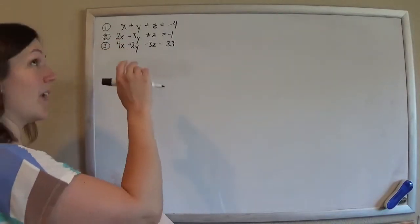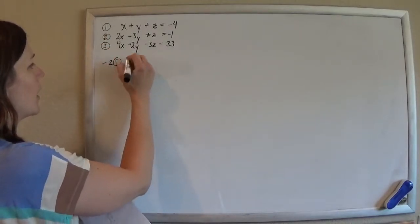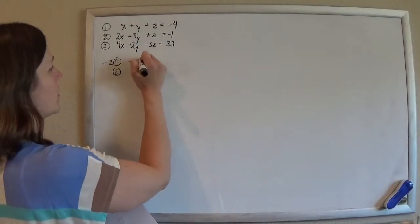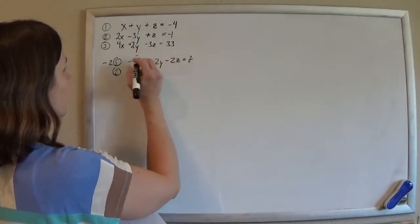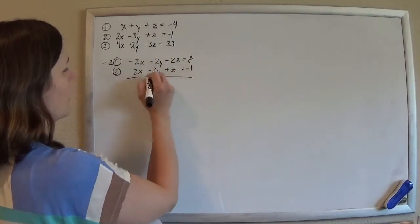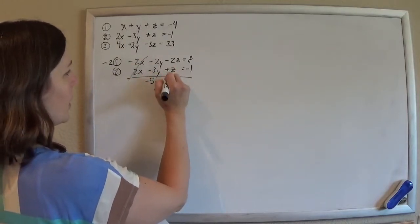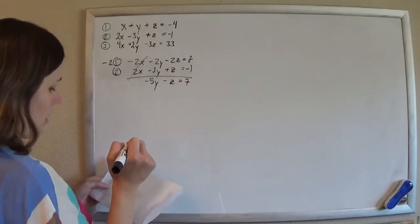So, bye-bye, those x's are going to go. We're going to multiply negative 2 times row 1 and add it to row 2 so that they go away. So I have negative 2x minus 2y minus 2z equals 8. And then this guy stays put. And then those go away like we planned. And then I have negative 5y minus z equals 7.